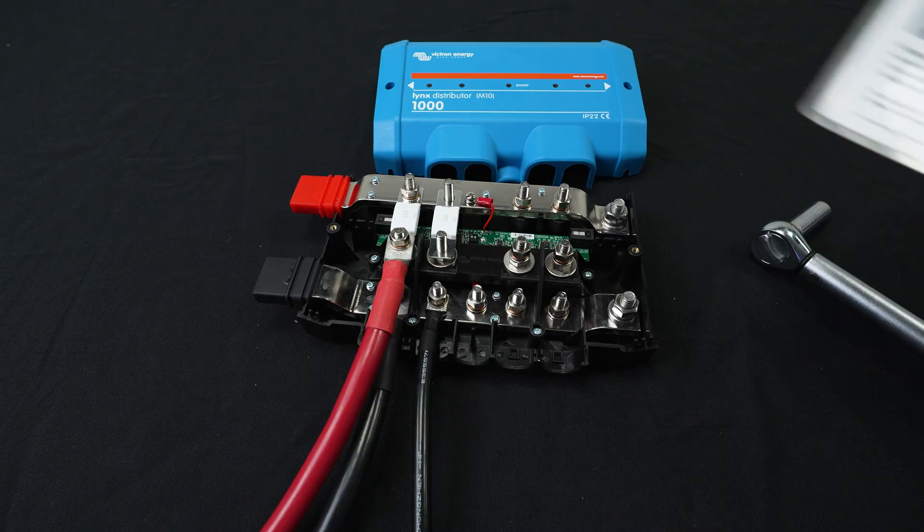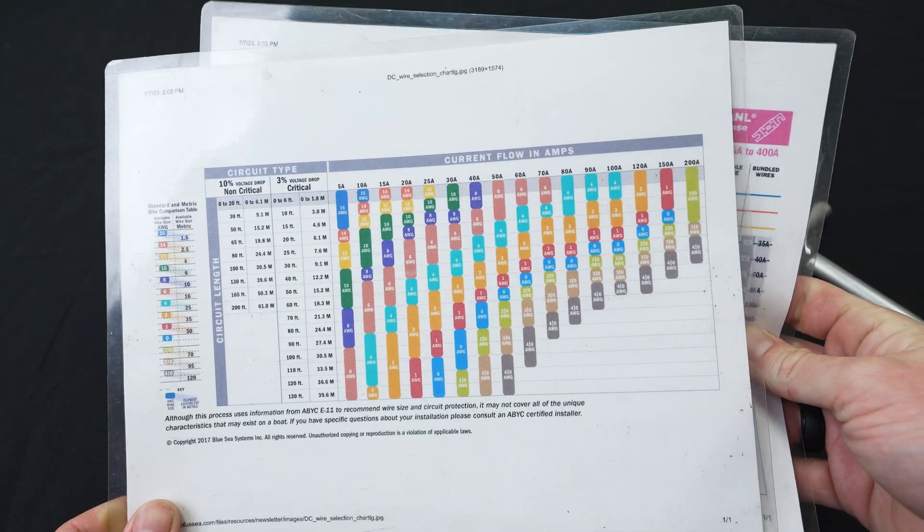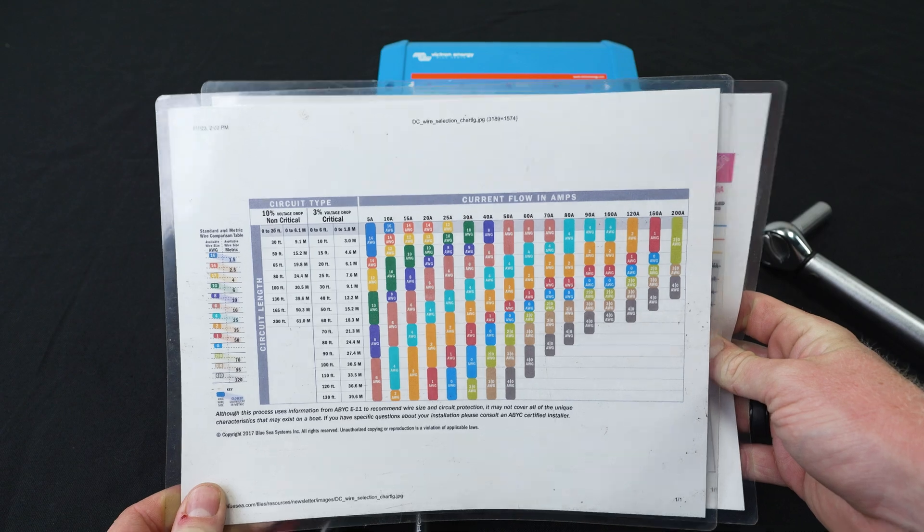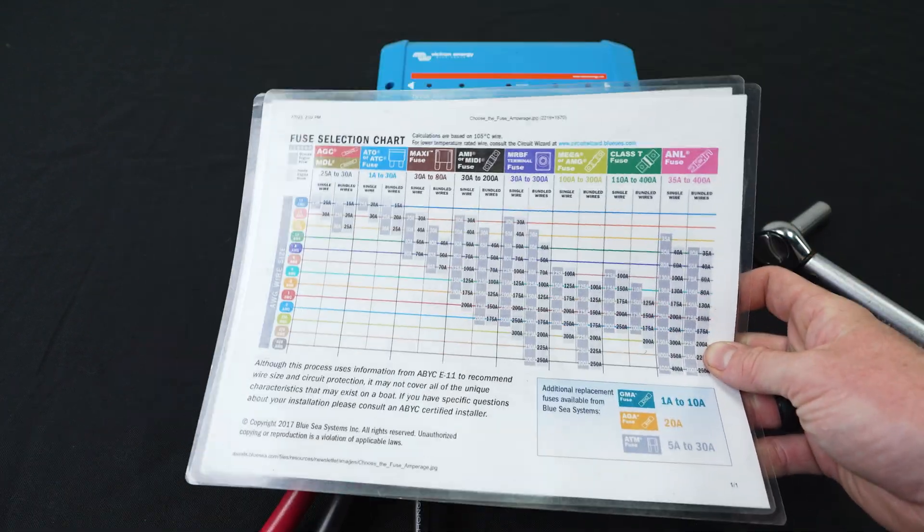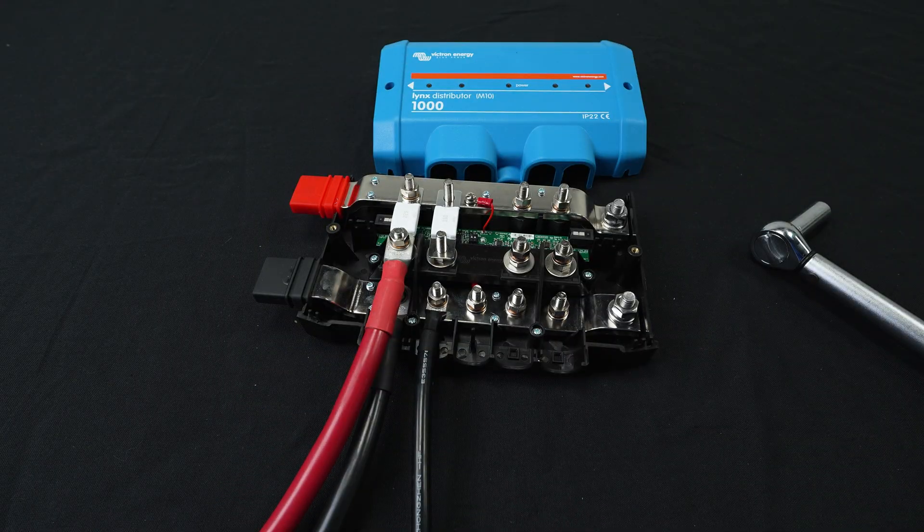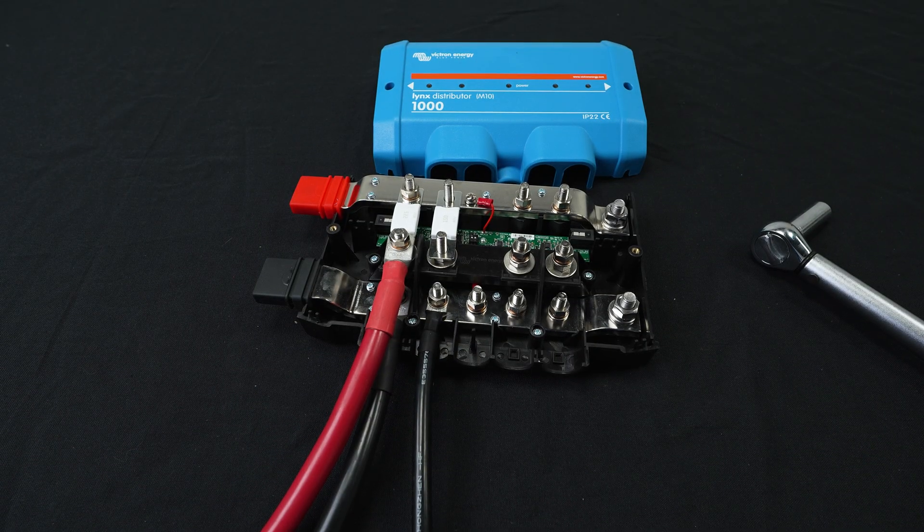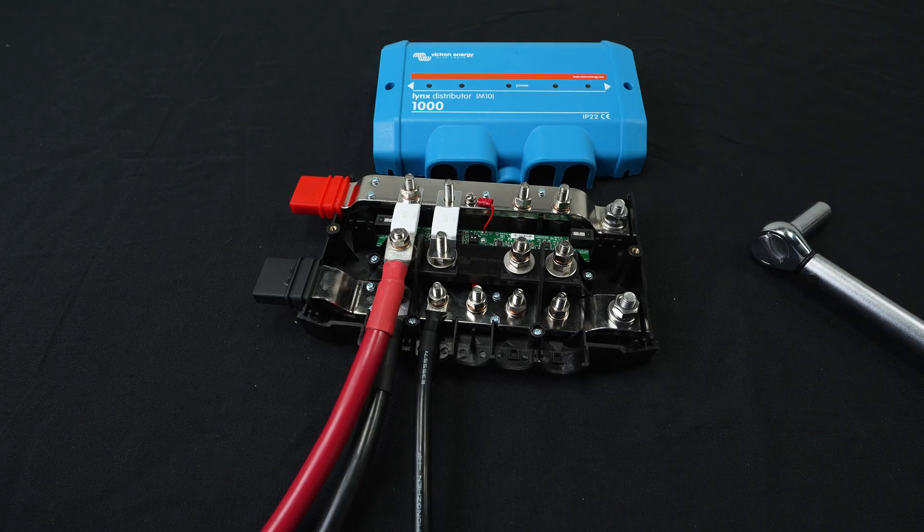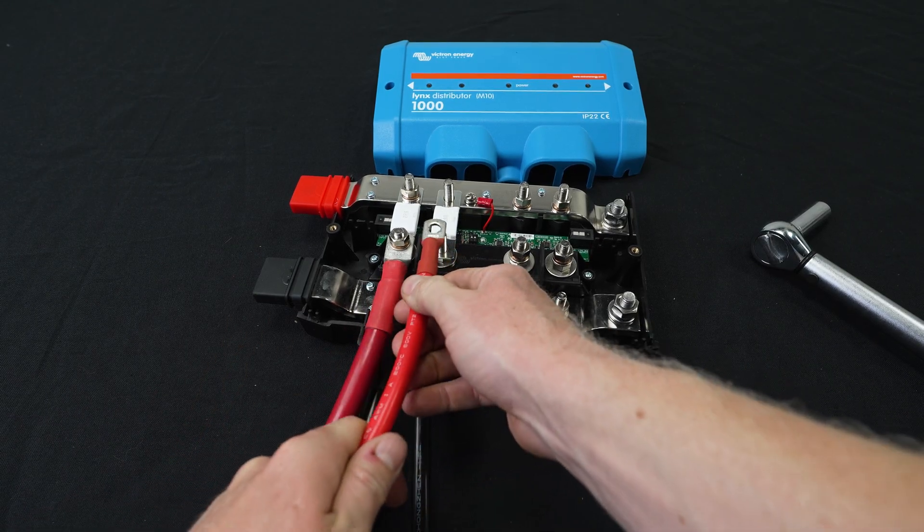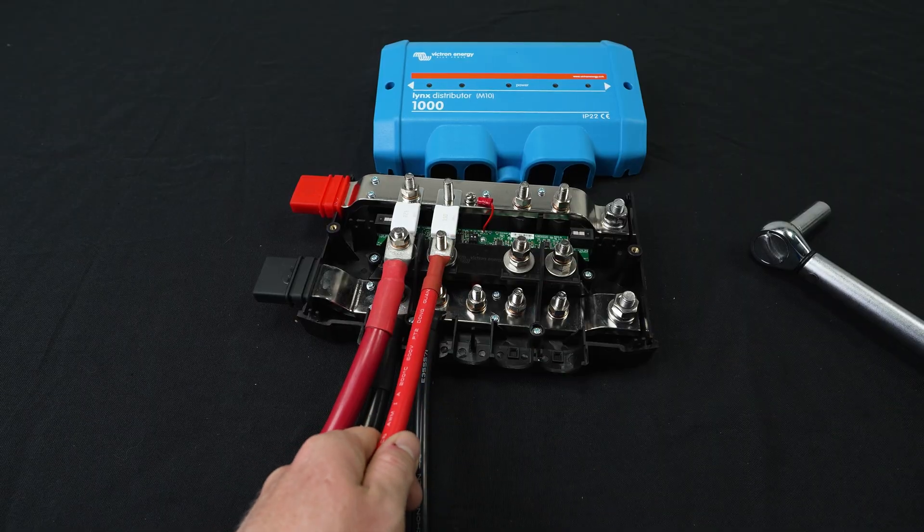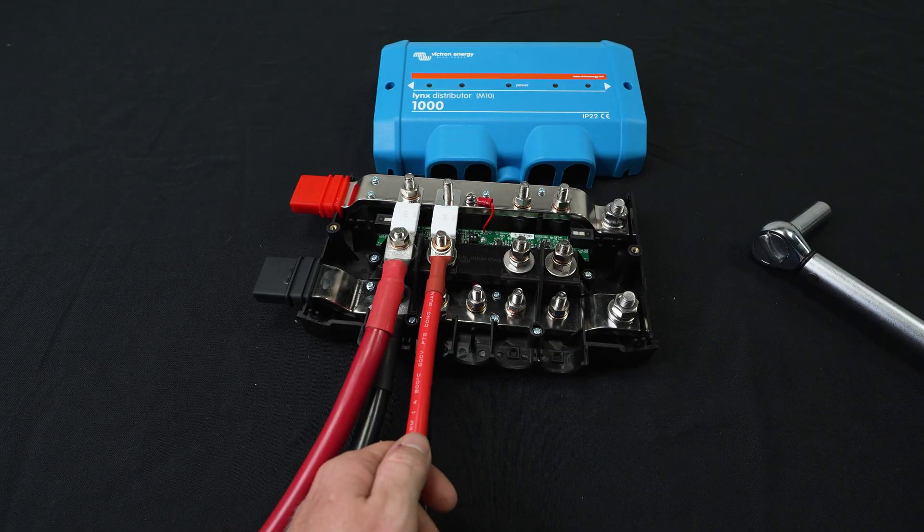And all of our wire and fuse sizing starts with these charts from Blue Sea Systems. So I'm going to put a link to these in the description. These are really helpful. If you need more help than the charts can give, you can always book a consult with us or start your system design with our design consultation package where we'll make a wire diagram and a list of all the parts that you need so that you don't have to guess on all the wire sizes and fuse sizes.